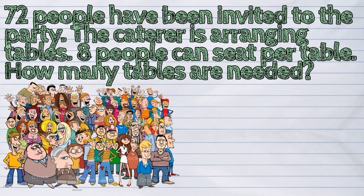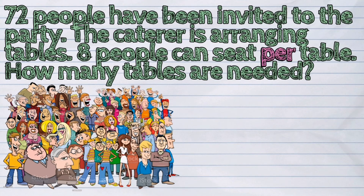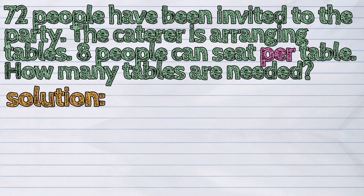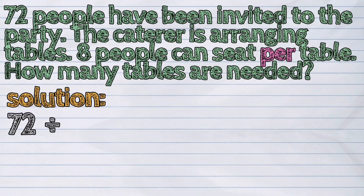Last example. Seventy-two people have been invited to the party. The caterer is arranging tables. Eight people can sit per table. How many tables are needed? Through the verbal clue per, we can depict that we are going to divide. So the solution is to divide the number of people invited by the number of people that can sit per table. Seventy-two divided by 8 is 9.